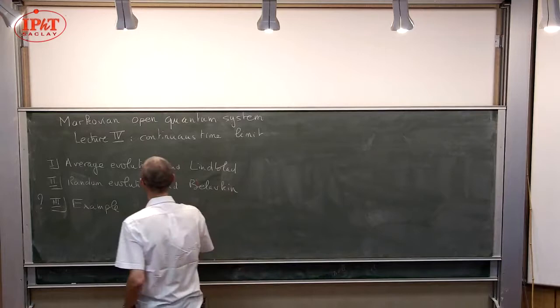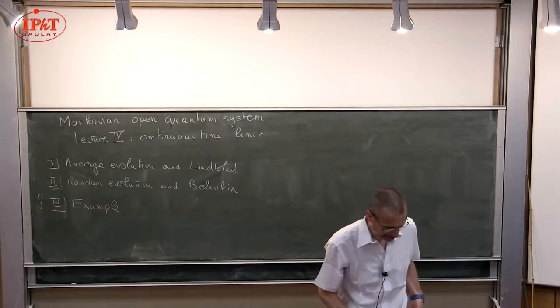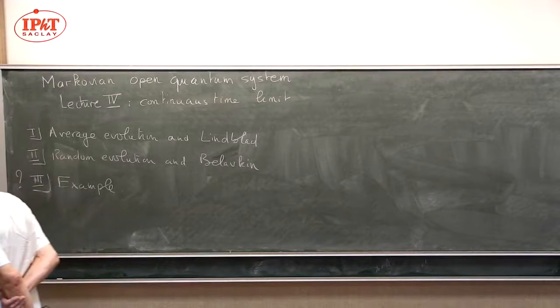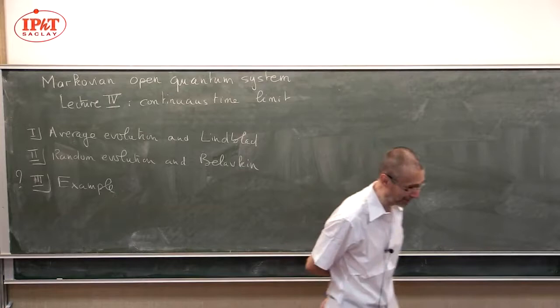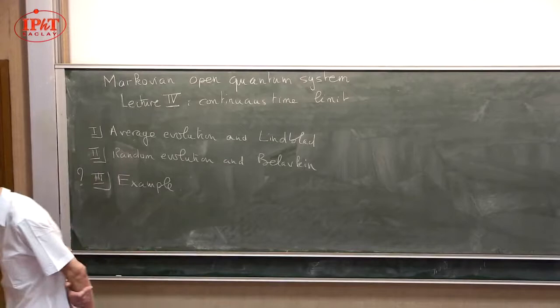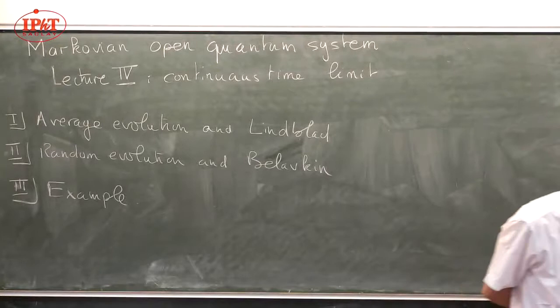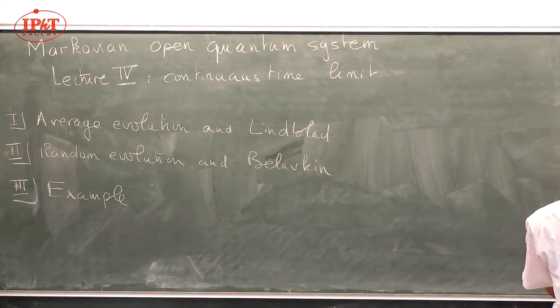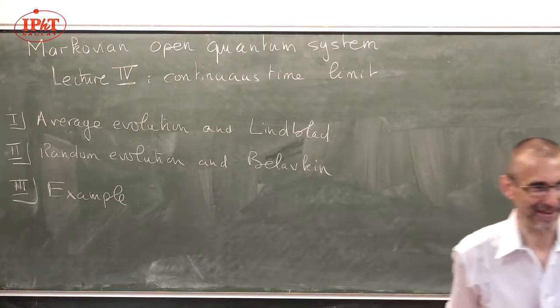Good morning. This is the fourth lecture. Today we are going to talk about the continuous time limits. Let me remind you that we ended the previous lecture by giving an example of discrete time evolution and its application to the measurement of Rabi oscillations. The main theoretical result of the previous lecture was the formula for a complete random evolution under repeated indirect measurements. If there are any questions about the previous lecture, now is the time. If not, I will go on with taking the continuum limit.